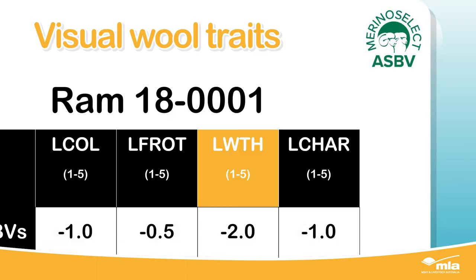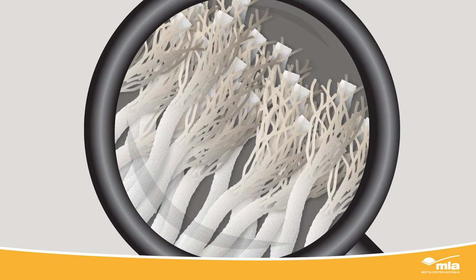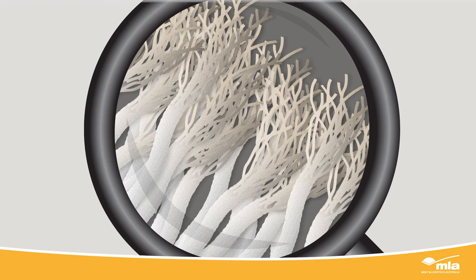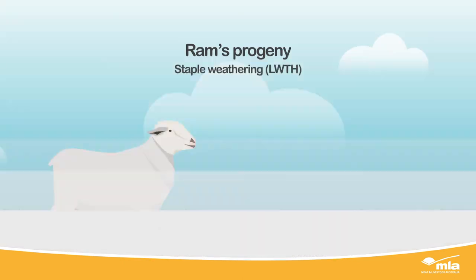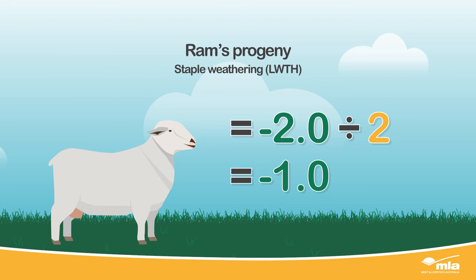LWTH is staple weathering and describes the degree of deterioration down the staple due to light and water penetration. A ram with a staple weathering ASBV of negative 2.0 will on average produce progeny that show a negative 1.0 score for less staple weathering, compared to a ram with an ASBV of 0.